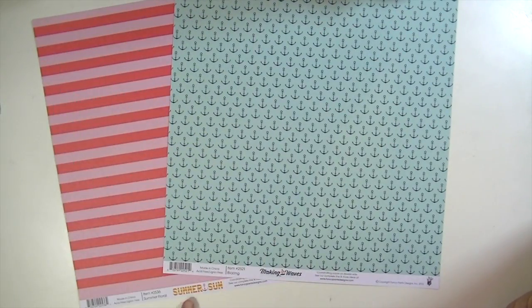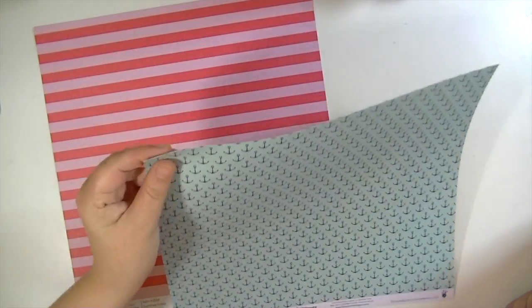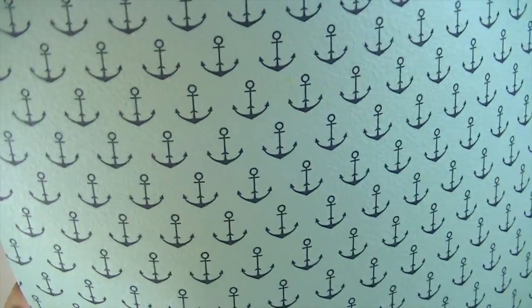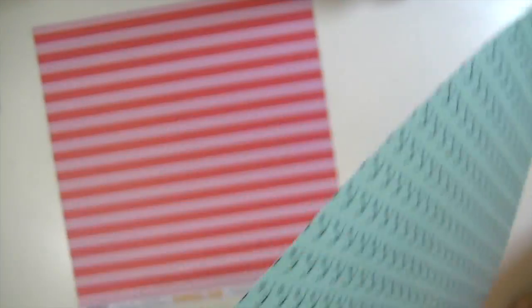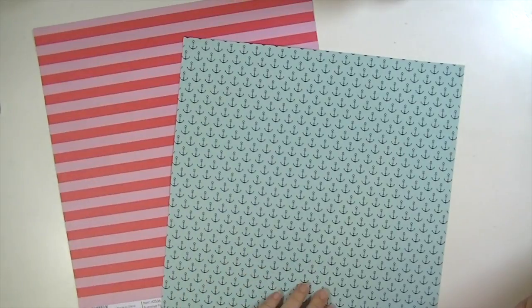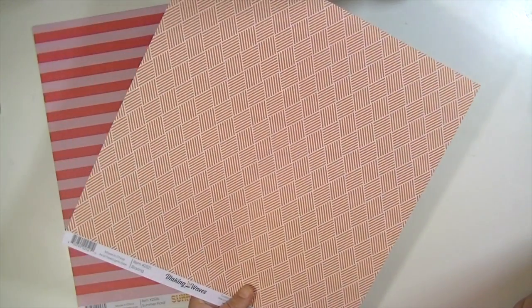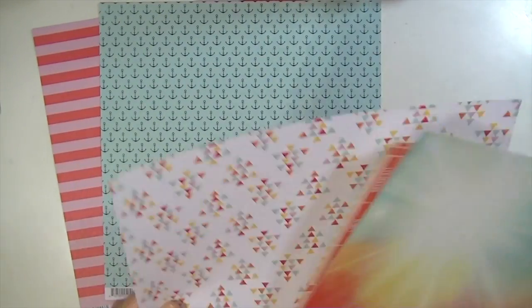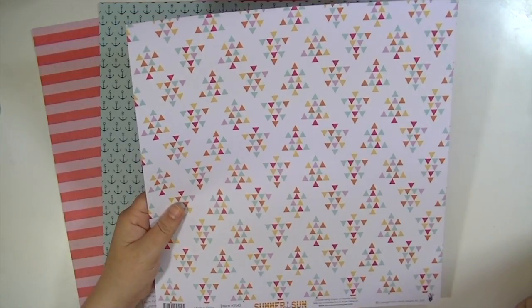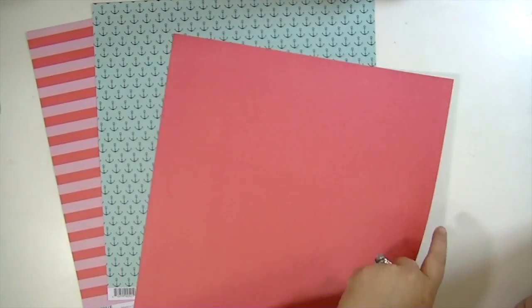This is from Fancy Pants, but it's a different collection, Making Waves. One thing to note about Fancy Pants paper is that it's textured. It's almost like orange peel paper. This is kind of like a dusty blue with a navy anchor, and the other side is this orange pattern. Very summery. This one's back to the Summer Sun collection. And then the other side is just the solid pink.